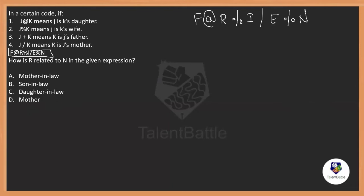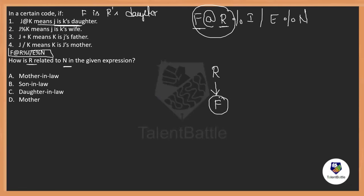First we decode this expression using the given symbols. Take the first and second terms: f @ r means f is r's daughter — so r's daughter is f, meaning f is female. Next, second and third terms: r % i means r is i's wife.